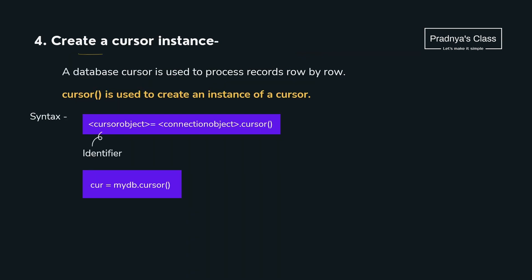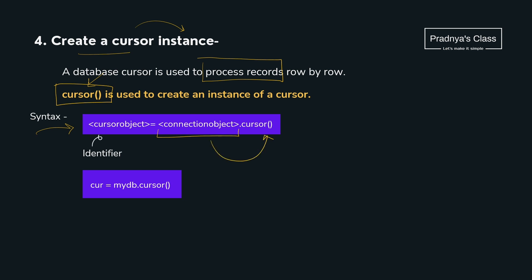Moving ahead to the next step, we are going to create the cursor. The use of a cursor is to process records row by row. To create a cursor we will use the cursor() function. Look at the syntax — in the previous step we created a connection object, and on that we call .cursor(). Look at the example — mydb is the name of the connection object, and this command creates the cursor object.